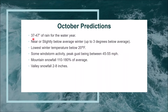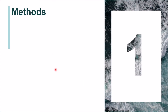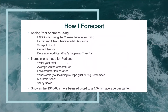Back in October I called for 37 to 47 inches of rain for the water year, which runs from October 1st to September 30th of the following year. I forecast near or slightly below average temperatures during the winter, up to three degrees below average, with the lowest winter temperature below 20 degrees, a couple of wind storms with 45 to 55 mile per hour peak gusts in Portland, great mountain snowfall in the Cascades, and valley snowfall of two to eight inches — average to maybe slightly above average.